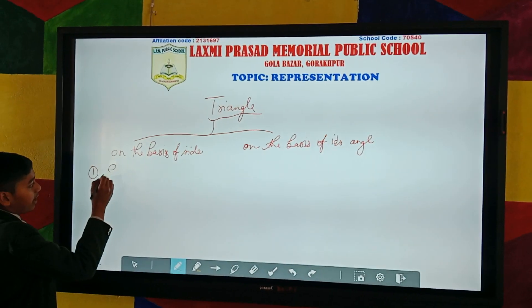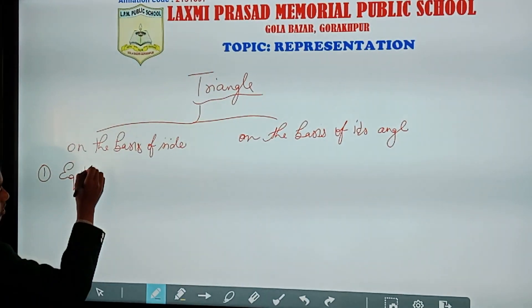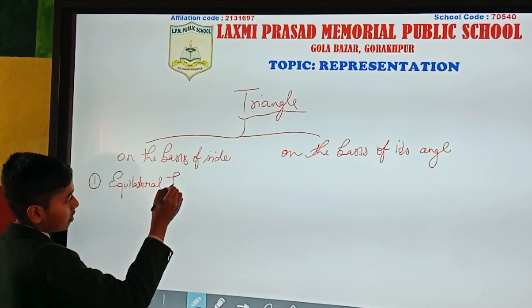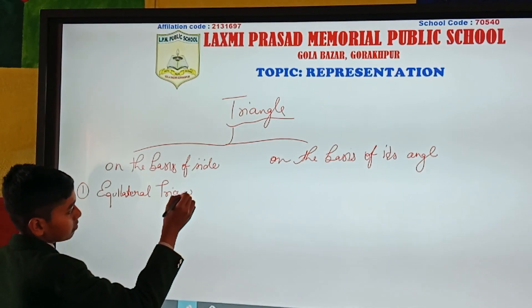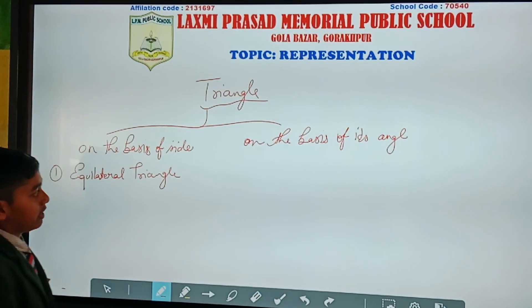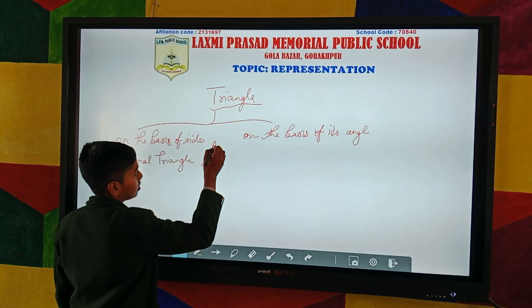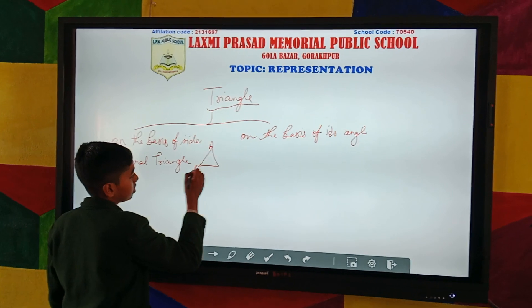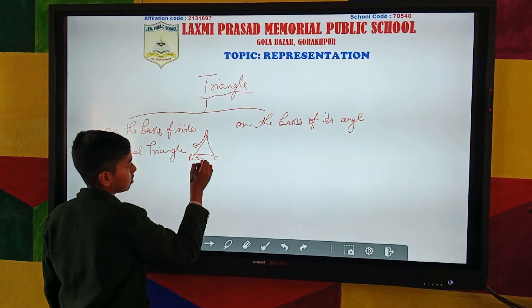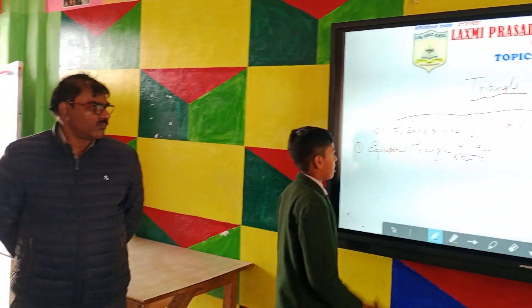First one is equilateral triangle. A triangle in which each side is equal is known as equilateral triangle. For example, this one is the example of equilateral triangle.